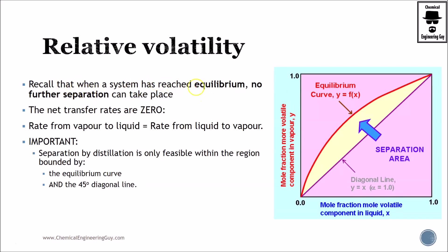Recall that when a system has reached equilibrium it will be impossible for us to keep separating the material. Once again, the driving force or the rate will be zero in equilibrium. The rate from vapor to liquid equals the rate from liquid to vapor of both A and B. Separation by distillation is only feasible within the region bounded between these two curves. This is the curve, and distillation will be only possible within this part right here, because outside of these species we do not have a driving force.